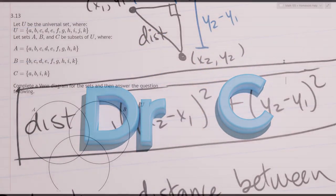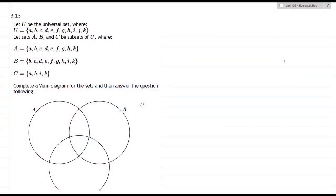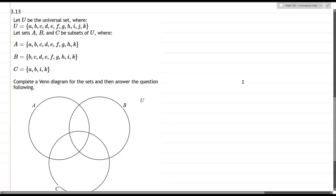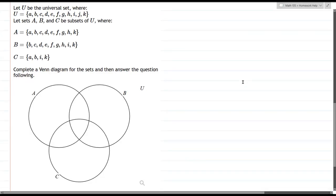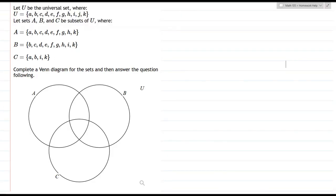Here we have a universal set and three sets A, B, and C. Now this problem already gave us a Venn diagram, but there's three sets, and the three-set Venn diagram is always going to look like this right here. So all we need to do is go through and put in all the elements in the right place. Let's go ahead and start that off.